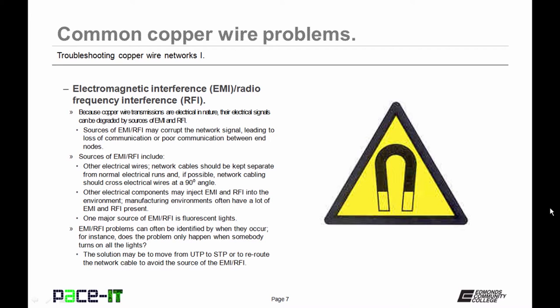These include other electrical wires. Network cables should be kept separate from normal electrical runs and, if possible, network cabling should always cross electrical wires at a 90 degree angle. Never run network cables right alongside the normal electrical run as the probability of interference will greatly increase.